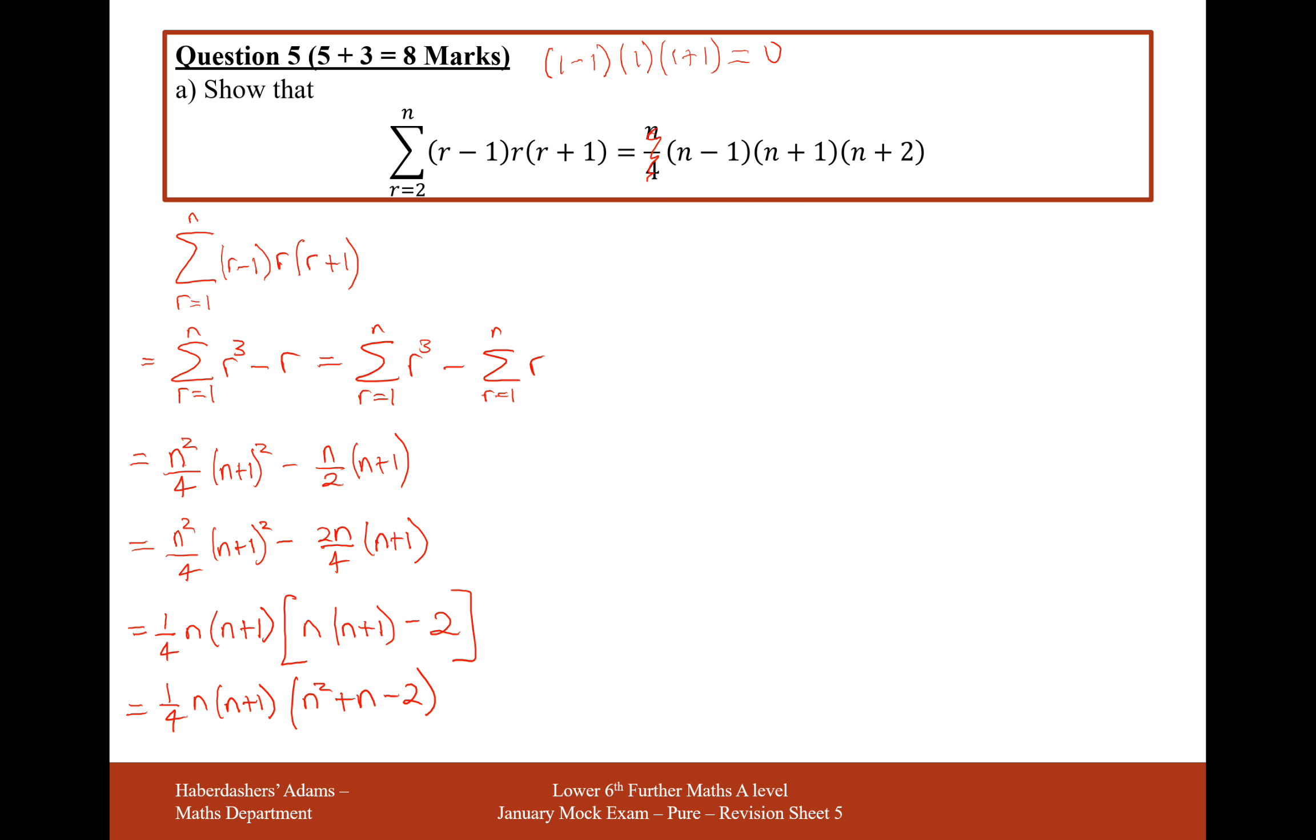We've already got this n over 4, we've already got this n plus 1. Does it factorise to n plus 2 n minus 1? I think it does. So a quarter n plus 1 n minus 1 n plus 2. So we've just checked our answer there, making sure that that factorises.